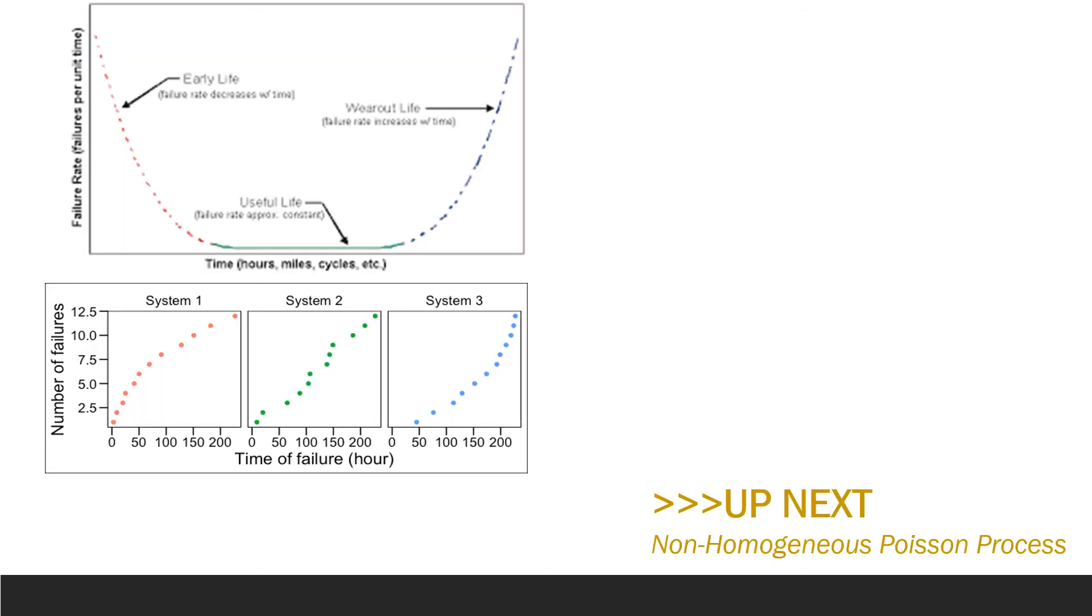Now to maybe understand this a little bit more let's look at three hypothetical systems. So notice here that the x-axis has time of failure and the y-axis has the cumulative number of failures as this time goes on.